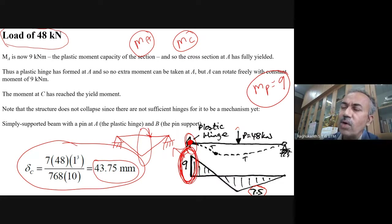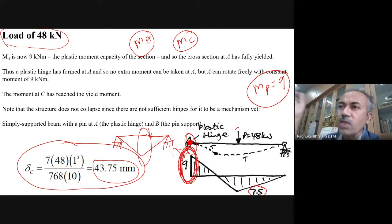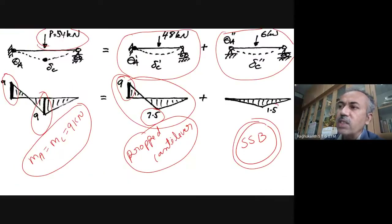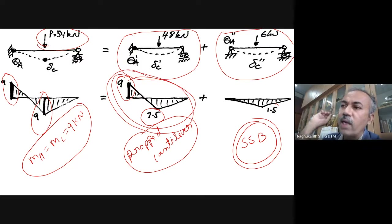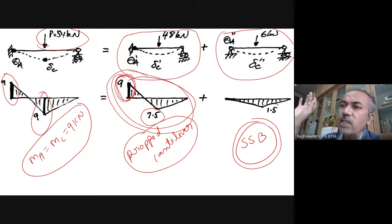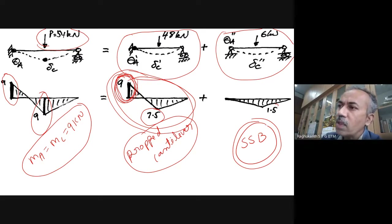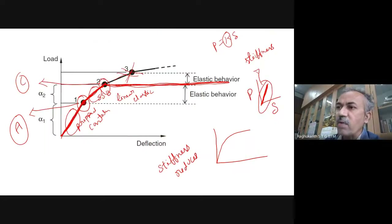Plastic analysis means you are doing elastic analysis only, but the bending moment diagram changes. Once hinge forms, your propped cantilever converts to simply supported — then you do elastic analysis again. So this is the easiest way: 48 kilonewtons will be taken care by the propped cantilever, and once plastification happens, our assumption is that this point cannot take any more extra bending moment.